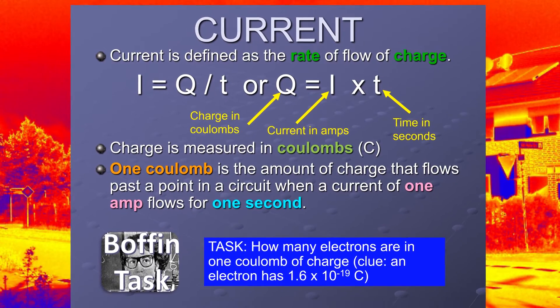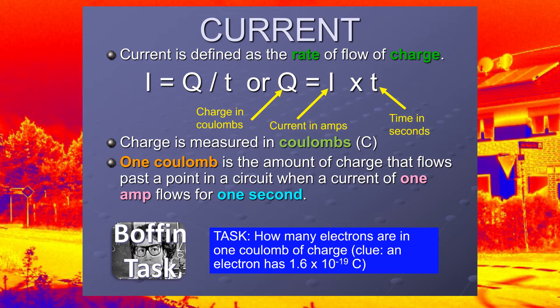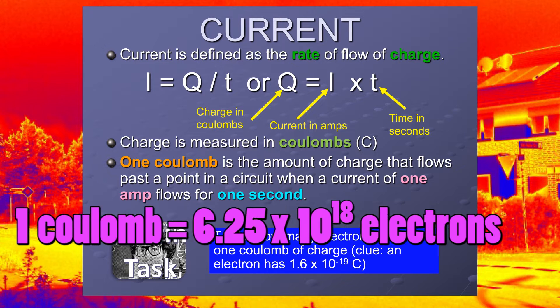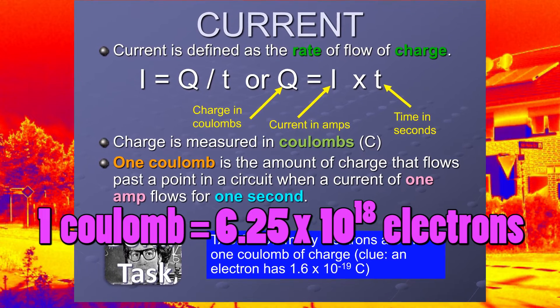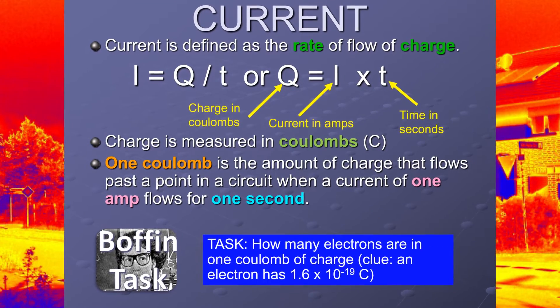By the way, the boffin task at the bottom: that's how many electrons are in one coulomb of charge. The answer is 6.25 times 10 to the power of 18 electrons. That's a heck of a lot of electrons in one coulomb.